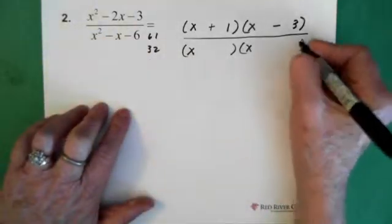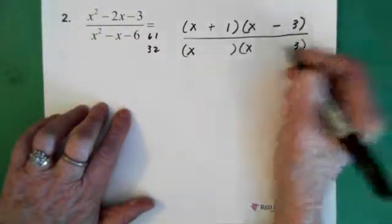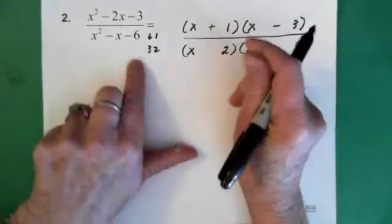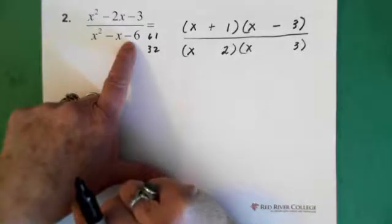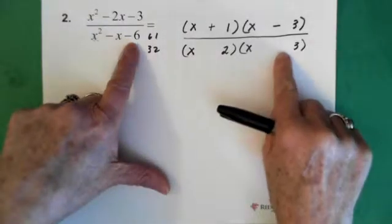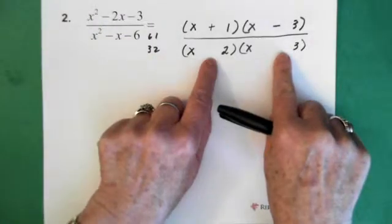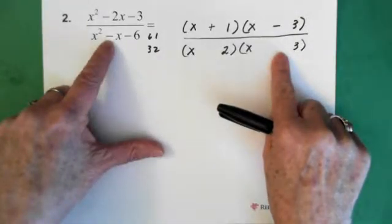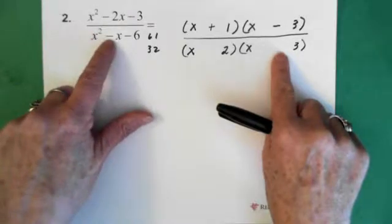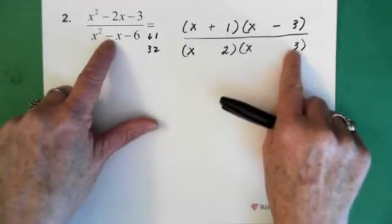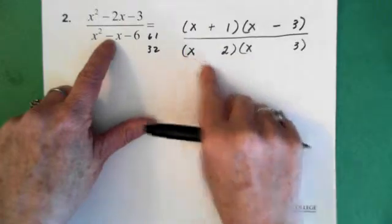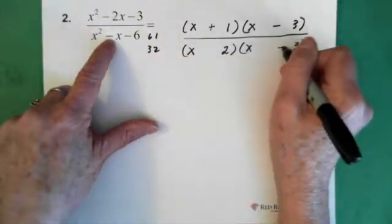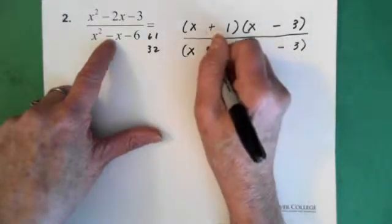So then I'm going to put the 3 here and the 2 here. Now I have to think about the sign. We have a -6 here. That tells me these two signs are different. I'm also noticing that there's a negative sign here for -x. So then I think, I know this comes from the addition of this, so the 3x added to the 2x. So then I'm assuming the negative goes there and the positive goes there.